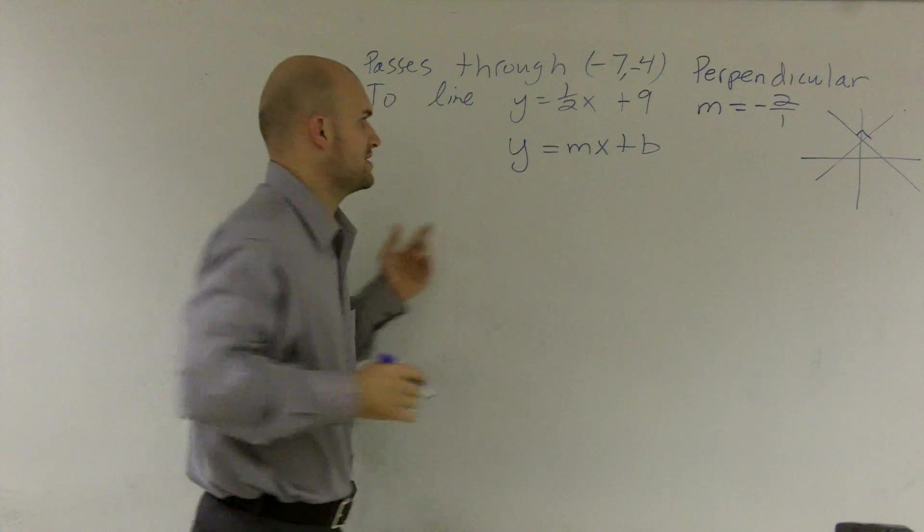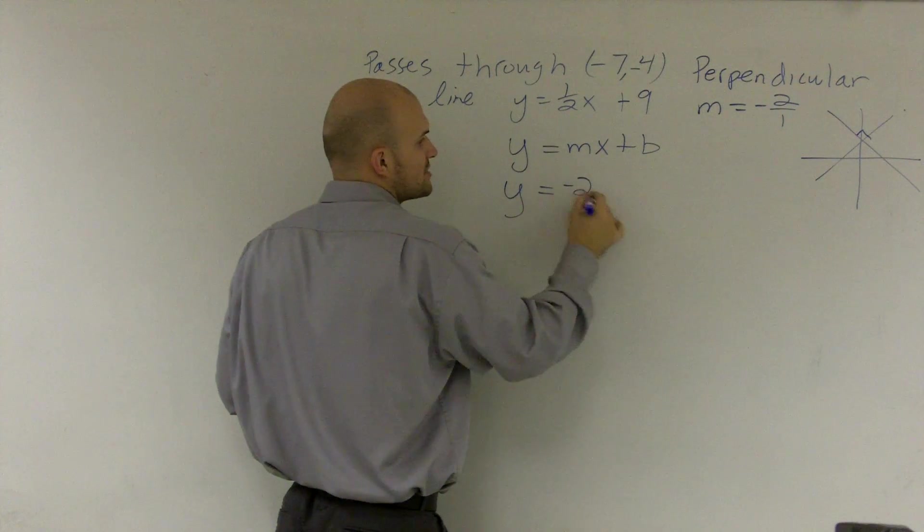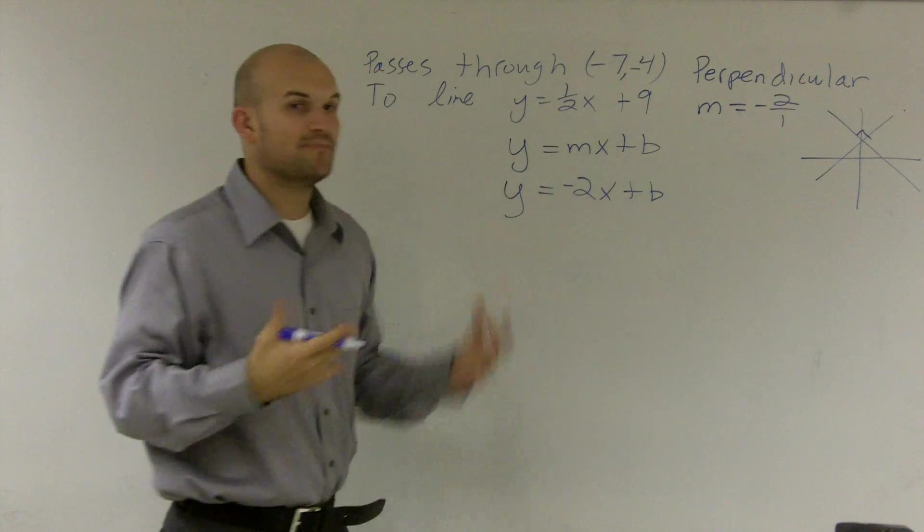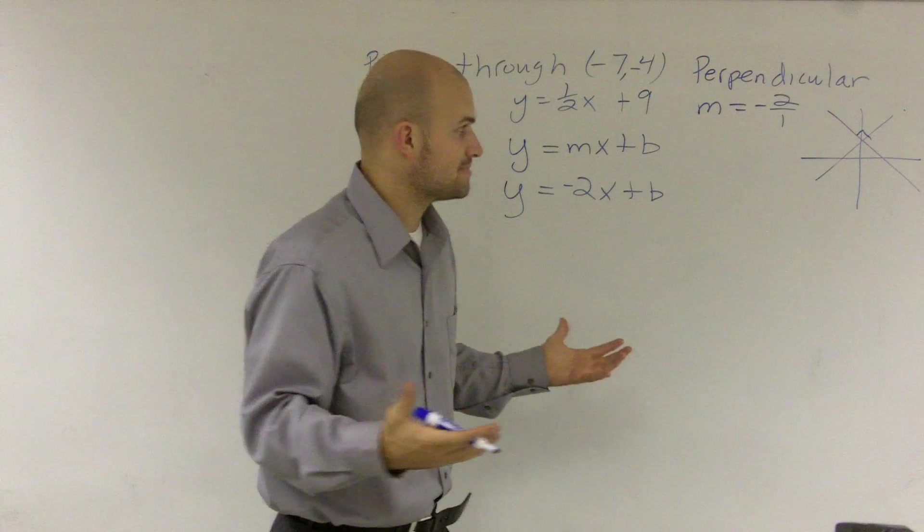So when I have my equation, I'm going to say, well, I know that y can equal negative 2 over 1, which is negative 2, x plus b. Now remember, b tells us what our y-intercept is. We don't know what the y-intercept is.